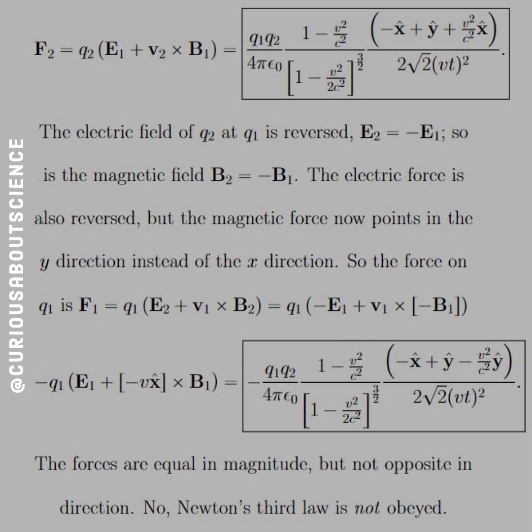The electric field of Q2 at Q1 is reversed: E2 equals negative E1, and the magnetic field is B2 equals negative B1. The electric force is reversed, but the magnetic force now points in the y-direction. The force on Q1 is F1 equals Q1(E2 + v1 cross B2). Plugging everything in gives the same magnitude but with a negative sign that affects the y-hat direction. The forces are equal in magnitude but not opposite in direction.